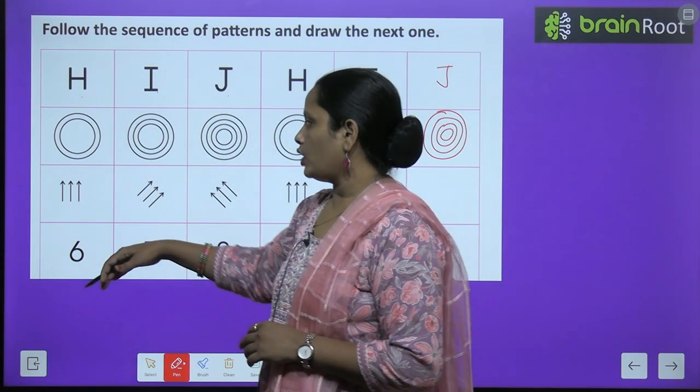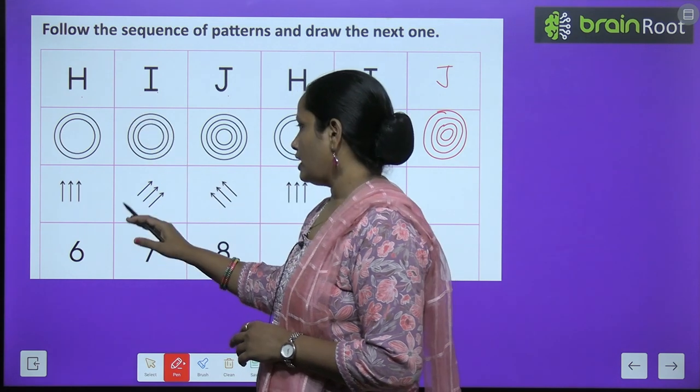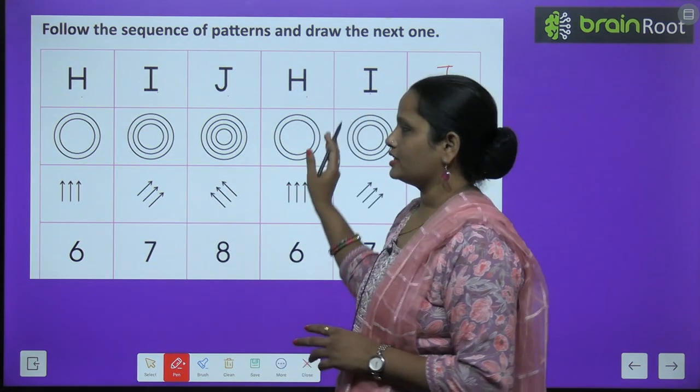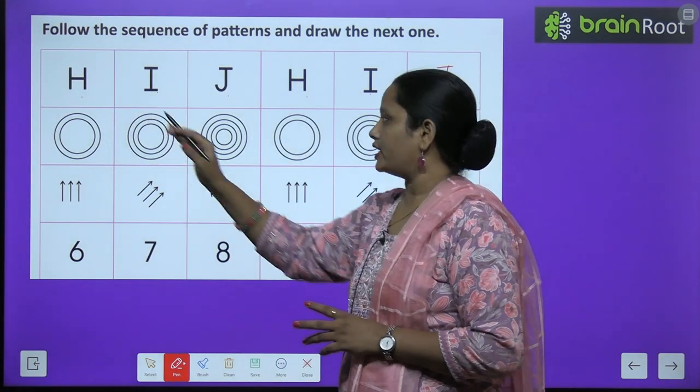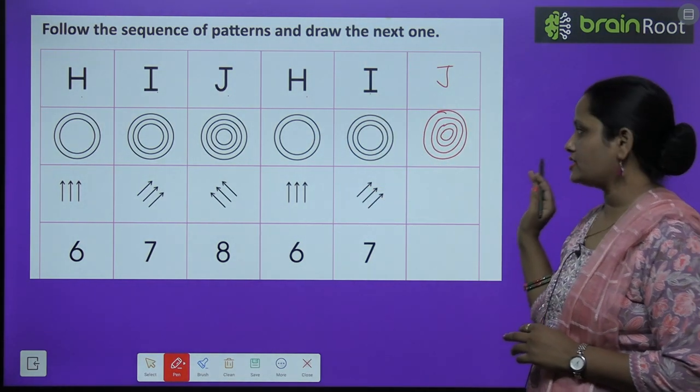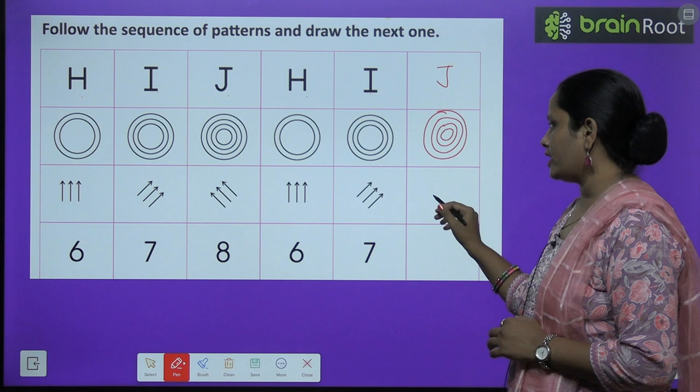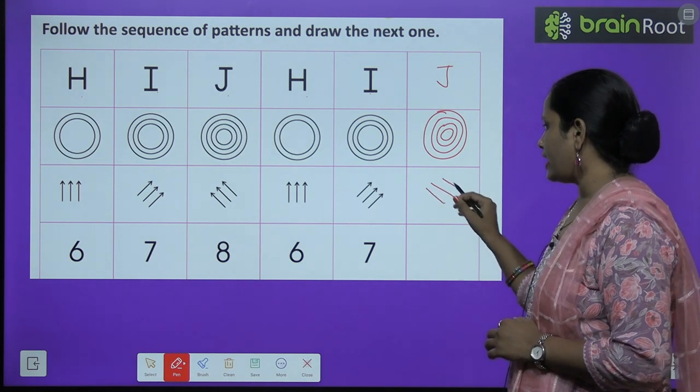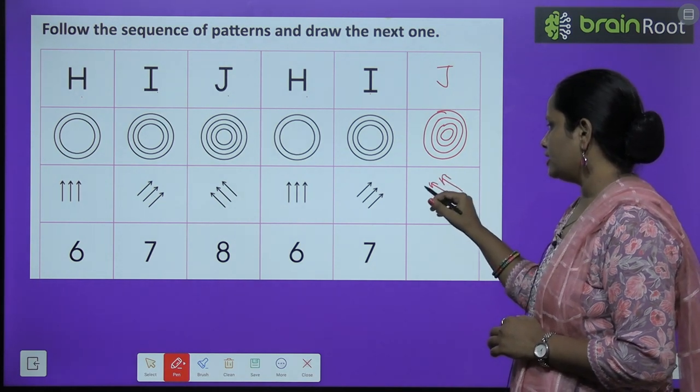Next. Arrow upward. Arrow sideways. Arrow this way. Next. Again arrow upward. Arrow right hand side. Now what will the arrow be here? Left hand side.